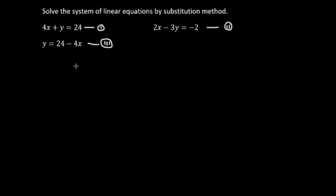Step number 2: from equation 1, we isolate y. So y equals 24 minus 4x. This is our y value, which becomes equation 3. We substitute this into equation 2.